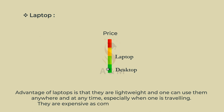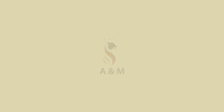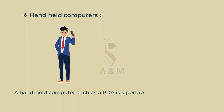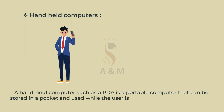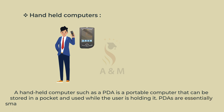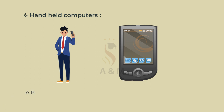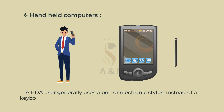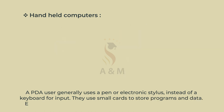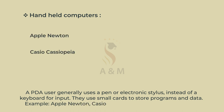Next is Handheld Computers. A handheld computer, such as a PDA, is a portable computer that can be stored in a pocket and used while the user is holding it. PDAs are essentially small portable computers and are slightly bigger than common calculators. A PDA user generally uses a pen or electronic stylus instead of a keyboard for input. They use small cards to store programs and data. Examples: Apple Newton, Casio Cassiopeia and Franklin eBookman.